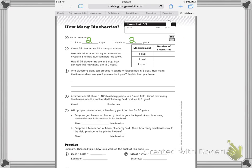It says about 75 blueberries fill a one cup container. So we know right away 75 blueberries fill a one cup container. Use the information and your answers to problem one to help you complete the table. Hint: If 75 blueberries are in one cup, how can you find how many are in two cups?